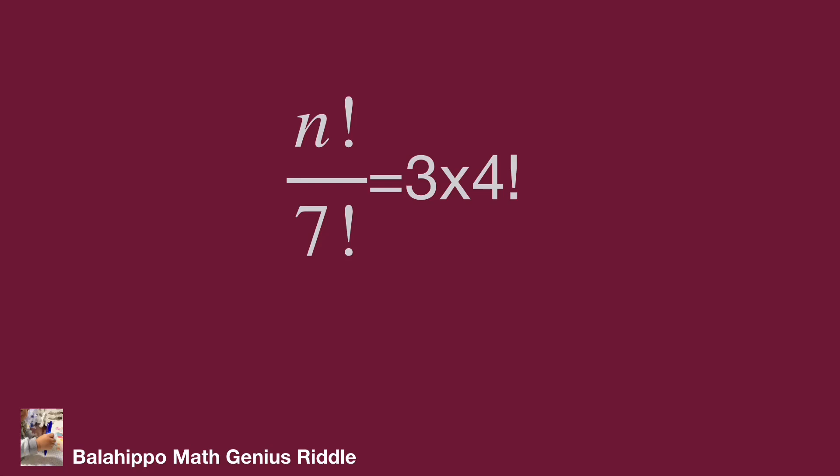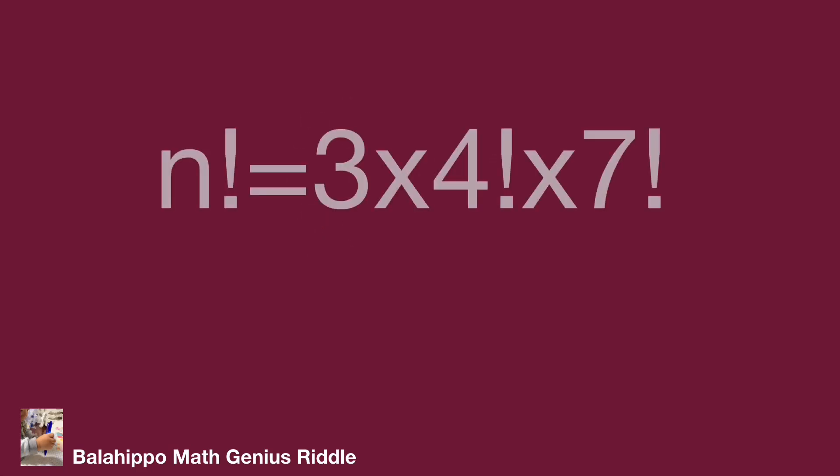The given equation is n factorial over 7 factorial equals 3 times 4 factorial. At first, multiply the 7 factorial to both sides of the equation. Then the equation is n factorial equals 3 times 4 factorial times 7 factorial.